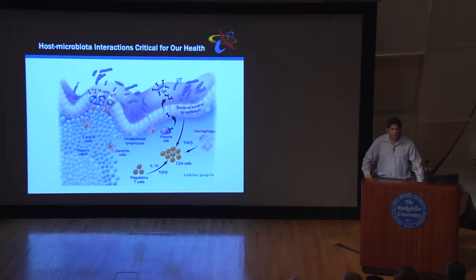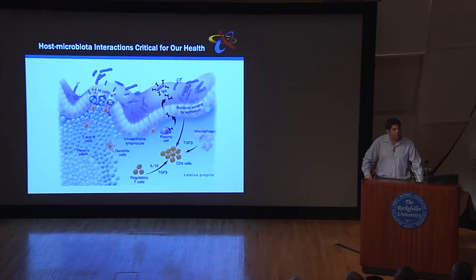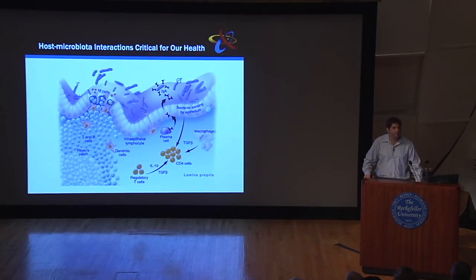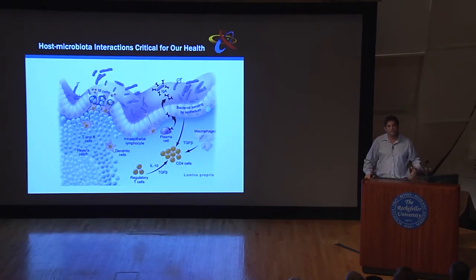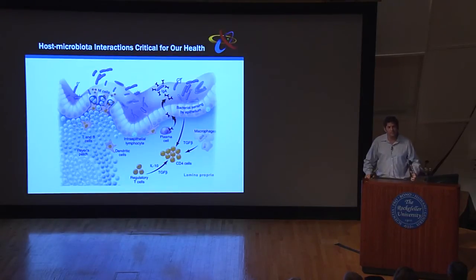The contribution of our group to the field relates to the interaction between our internal microbes and our human side. If you think about it, we have trillions of potentially harmful bacteria living just one cell layer away from our completely sterile inner self — so by theory we should all have died from sepsis right after birth. This is not the case because, in parallel to the evolution of our microbiota, we evolved a very complex immune system that ensures our microbes get what they need, but aggressively prevents any breach.